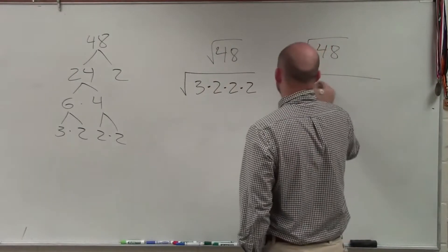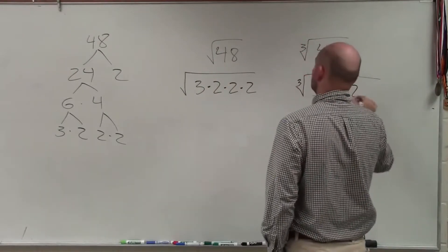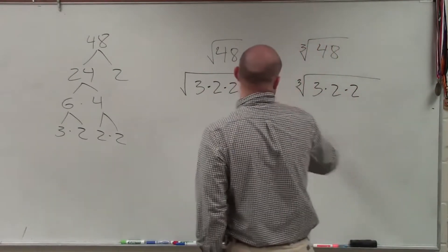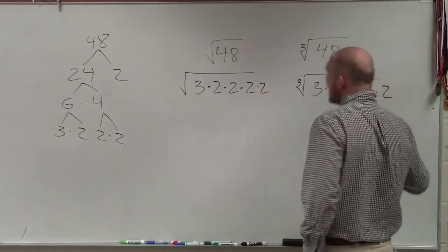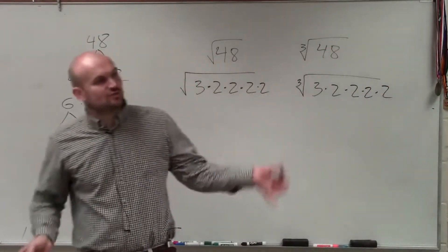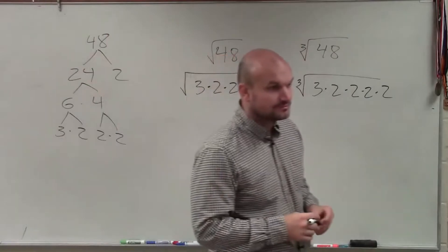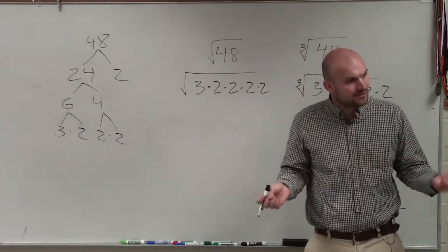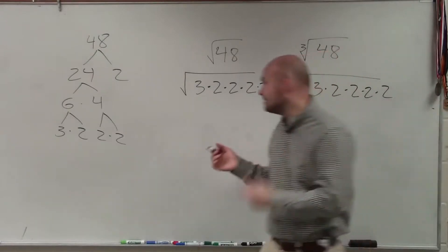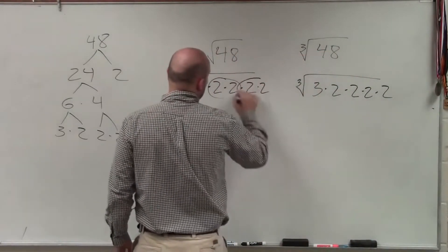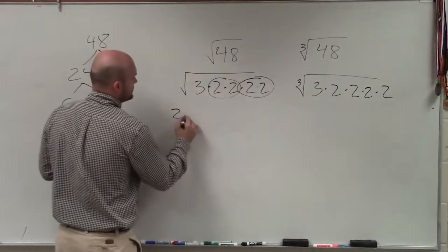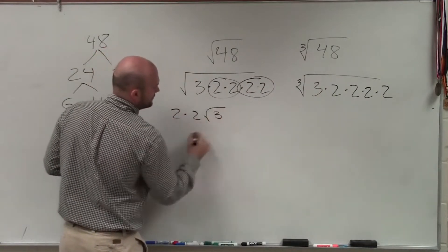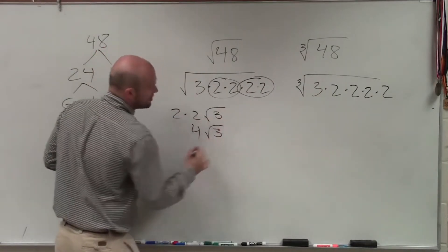For the cube root, I would do 3 times 2 times 2... oops, I forgot one, right? Now, the difference between the square root and the cube root. For the square root, we always want to pull out pairs, right? Because it's squared, so there's two of them. So I could pull out one pair and two pairs. So I'd have 2 times 2 times the square root of 3, which is 4 square root of 3.